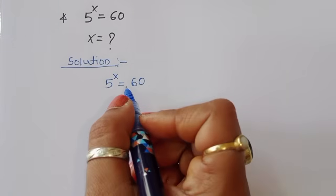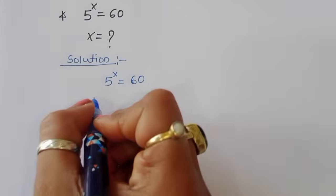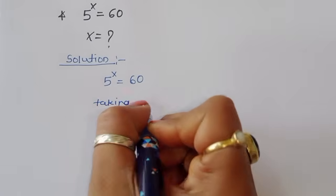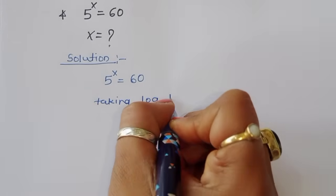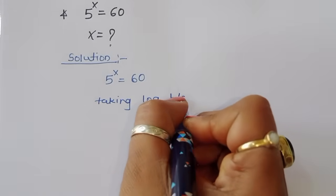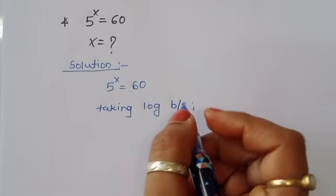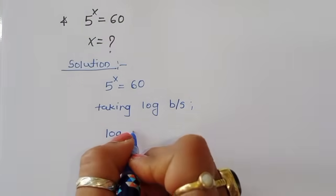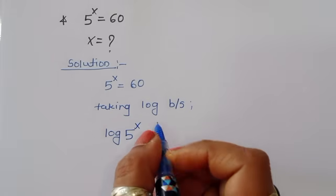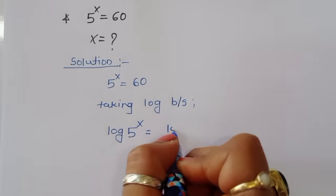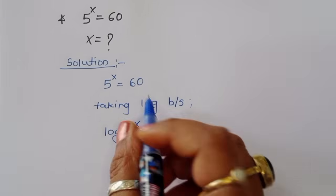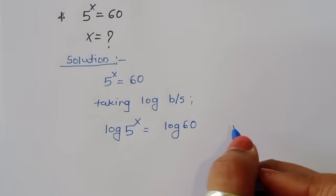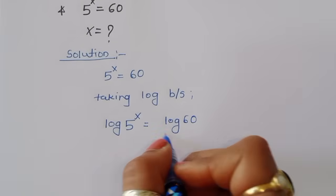We can solve this using logarithms. Taking log both sides, we get log of 5 power x is equal to log of 60.